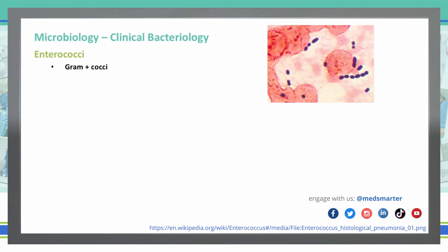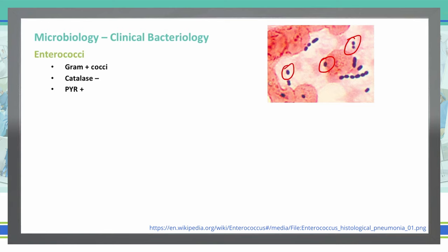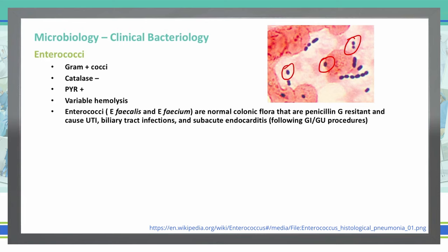Enterococci are a gram-positive cocci. They are typically going to be found alone or in small clusters. They are catalase negative and PYR positive. They do have a variable hemolysis, meaning we can't classify them as alpha, beta, or gamma hemolytic bacteria. Enterococci — specifically Enterococcus faecalis and faecium — are normal flora of the colon.